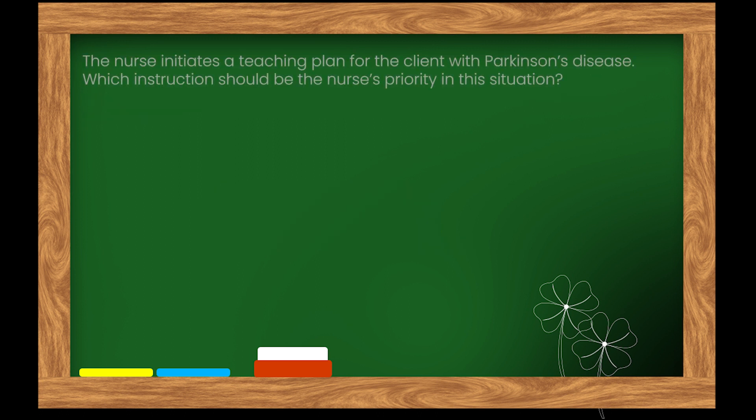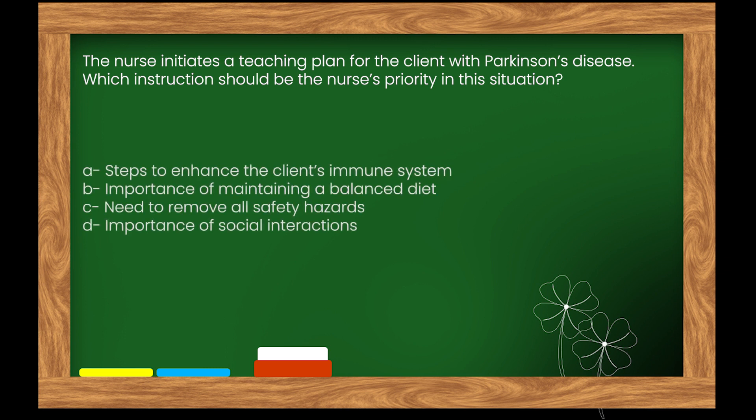Here is our next question. The nurse initiates a teaching plan for the client with Parkinson's disease. Which instruction should be the nurse's priority in this situation? Options: A. Steps to enhance the client's immune system. B. Importance of maintaining a balanced diet. C. Need to remove all safety hazards. D. Importance of social interactions.